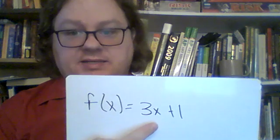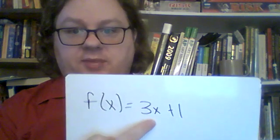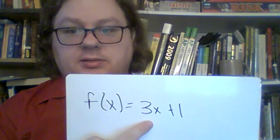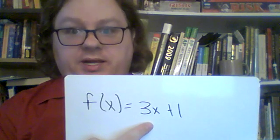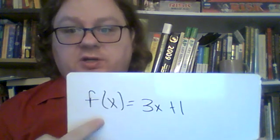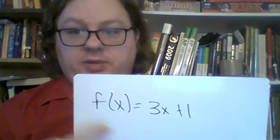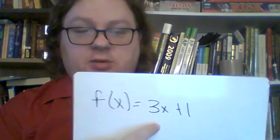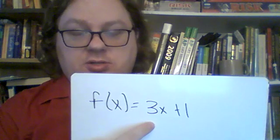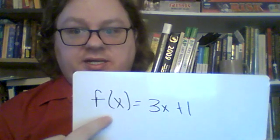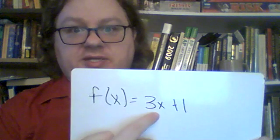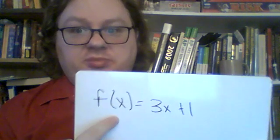So whatever you put in for x, let's say you put in 1. 3 times 1 is 3. 3 plus 1 is 4. So function of x would be 4. So if you put in 1, it becomes 4. It's dependent on whatever you put in here. So the dependent variable goes here. Independent goes here. Independent, dependent.